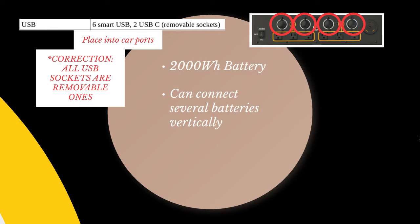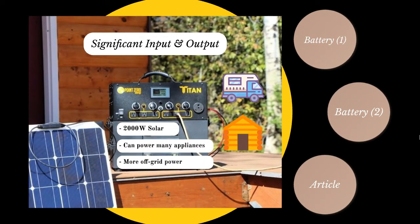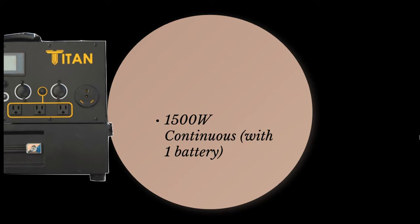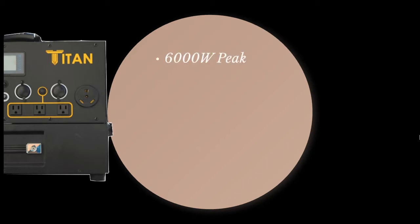Now, one of the more impressive features here within the battery is that it has a continuous power output of 3,000 watts. They recommend 1,500 watts continuous with one battery pack. But if you have two or more battery packs, you can go up to 3,000 watts of continuous power and up to 6,000 watts of peak power output. That's the best I've seen once again. That means you could power so many things with this.